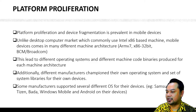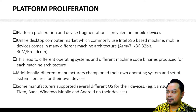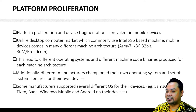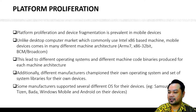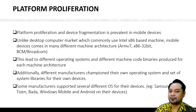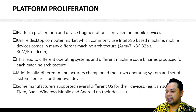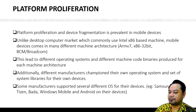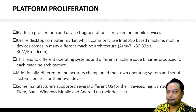Platform proliferation is a concept where there are many platforms that mobile device developers have to choose from. Unlike the desktop computer market, which commonly uses Intel x86-based machines with Intel or AMD processors, mobile devices come in many different machine architectures such as ARM, x86 32-bit or 64-bit, and some also have MIPS architecture. This leads to different operating systems and different machine code binaries produced for each machine architecture.